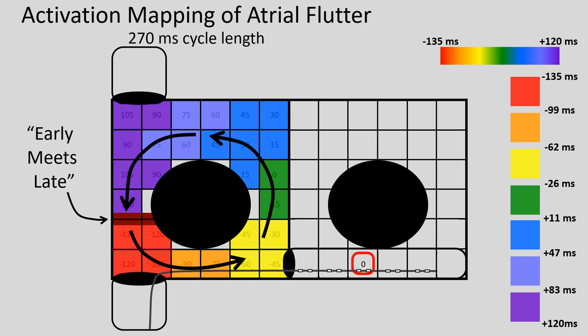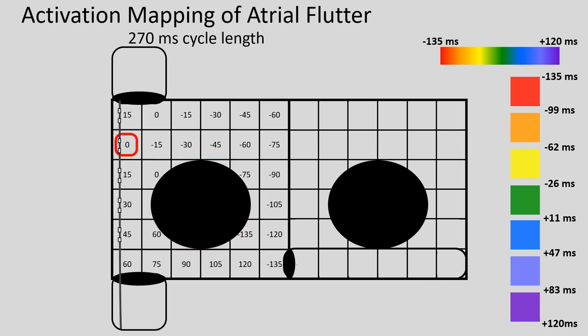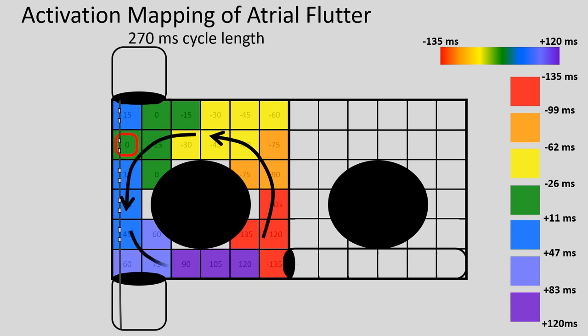If we map the exact same rhythm but move the reference catheter to a different location — in this case along the crista terminalis, using crista 3-4 as our reference — the rhythm is the same, but the local activation times with regard to this reference point are all going to be different. Each specific pixel will have a different value because it's relatively different compared to the new reference time. When we color-code from earliest to latest, the early-meets-late time moves to a different location — here at 5 o'clock on the tricuspid annulus.